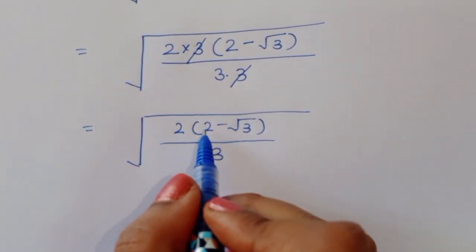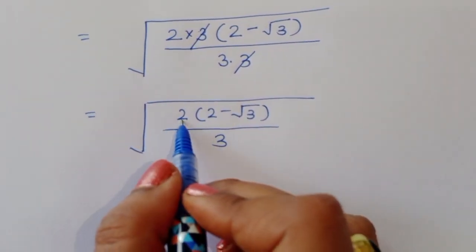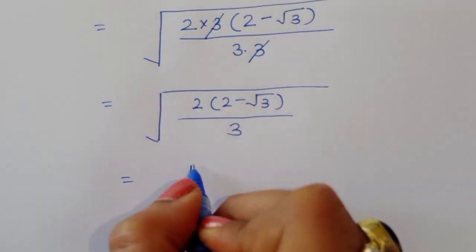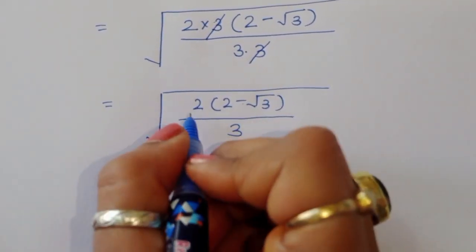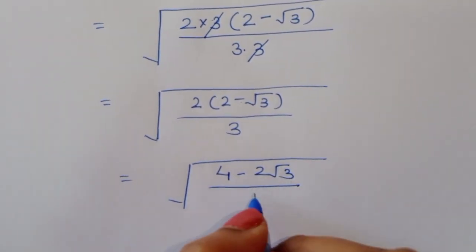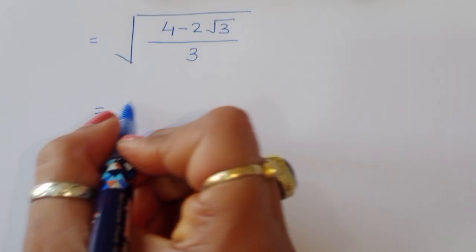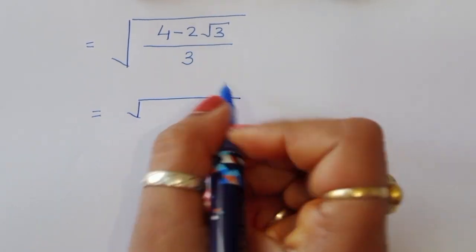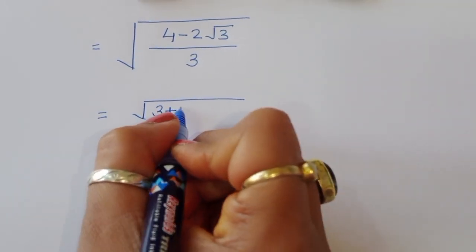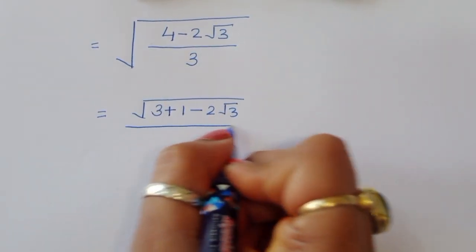Multiplying gives 2 times (2 minus square root of 3) divided by 3, so we get (4 minus 2 square root of 3) divided by 3. We can write 4 as 3 plus 1, so the expression inside the square root becomes (3 plus 1 minus 2 square root of 3) divided by 3.